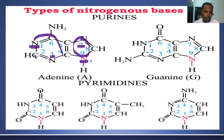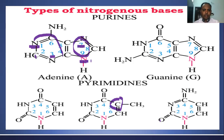Thymine has exactly the same structure as uracil, but only the fifth carbon atom contains one methyl group — so this structure is called 5-methyl uracil. We call this 5-methyl uracil as thymine. Cytosine differs in that the fourth carbon contains an amino group. All pyrimidine bases contain two nitrogen atoms in their rings.